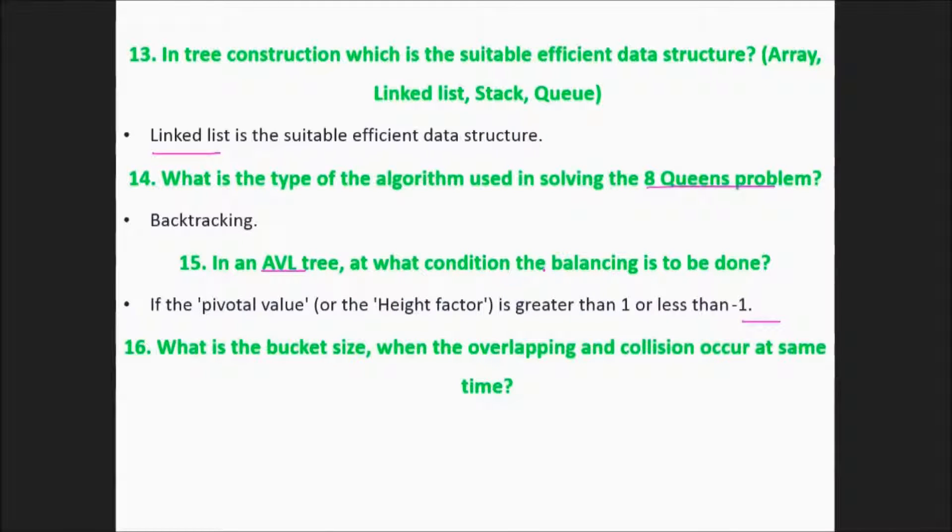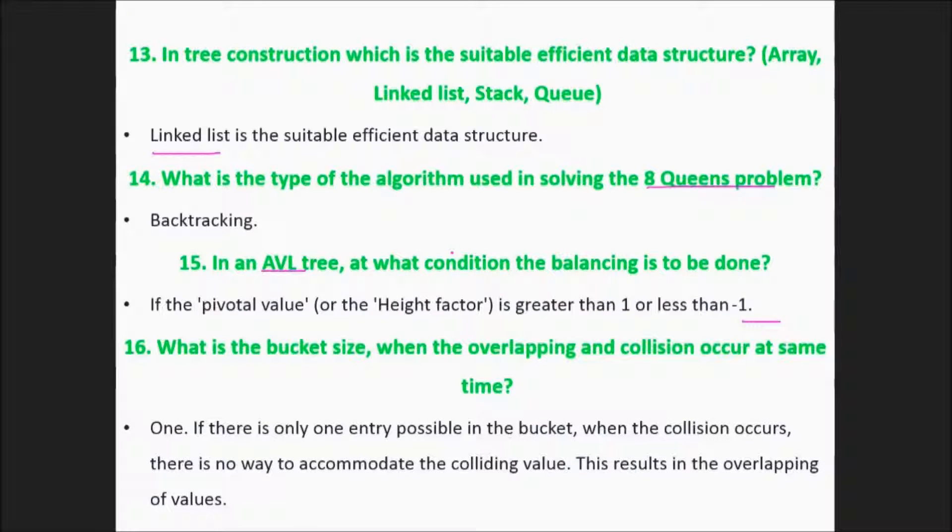What is the bucket size when the overlapping and collision occur at the same time? One. If there is only one entry possible in the bucket when the collision occurs, there is no way to accommodate the colliding values, so the result is the overlapping of values.